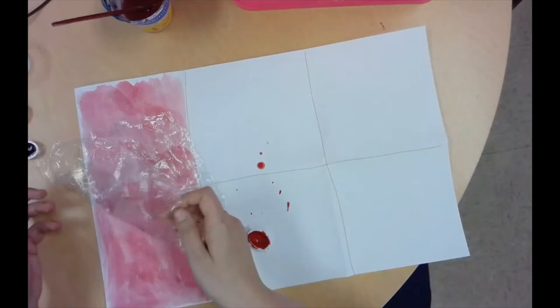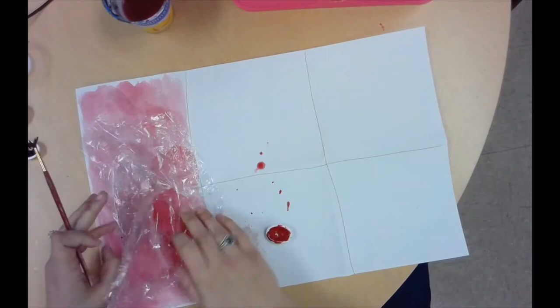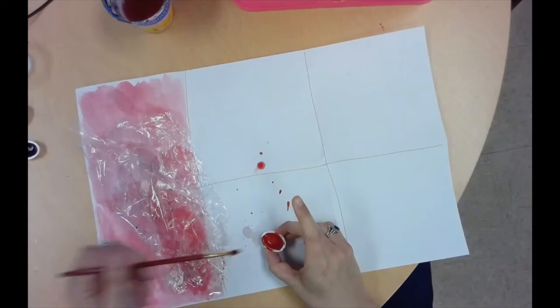Okay? And what the saran wrap does is it pulls the paint. So I'm going to go in and add more because I don't like how that's looking. It pulls and sticks to the paint. So look, I'm going to do that right now. Do you see how it's already clinging to it? So you have to work so fast.